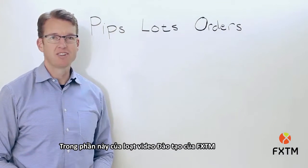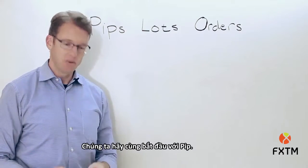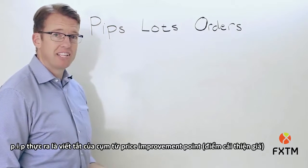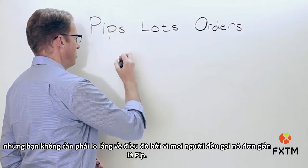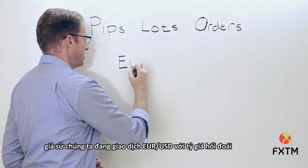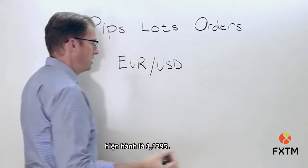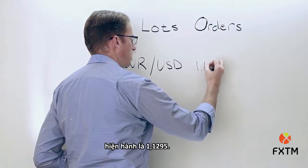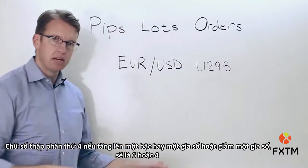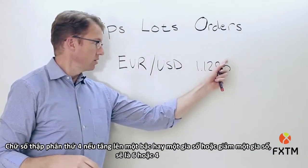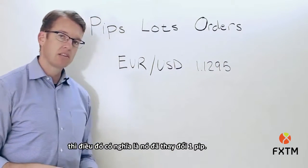In this portion of the FXDM educational video series we're going to be taking a look at pips, lots, and orders. Let's start with pips. Pip actually stands for 'price improvement point,' but everybody's just going to call it a pip. Let's start with a quick example: say we are trading the euro/US dollar exchange rate and its current quote is 1.1295. If that fourth decimal place goes up or down by one increment, to a six or to a four, then it's had a change of one pip.